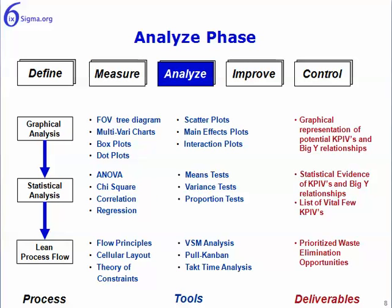Moving on to the Analyze phase — still in DMAIC. We have three steps: construct a graphical analysis, do a statistical analysis, and then lean out the process flow. In the graphical analysis, we get a picture of what's going on in the process and with the problem. The statistical analysis validates either the extent of the problem or the insight that the data gives us. In the lean process flow, we look at lean principles as they apply to the problem at hand.